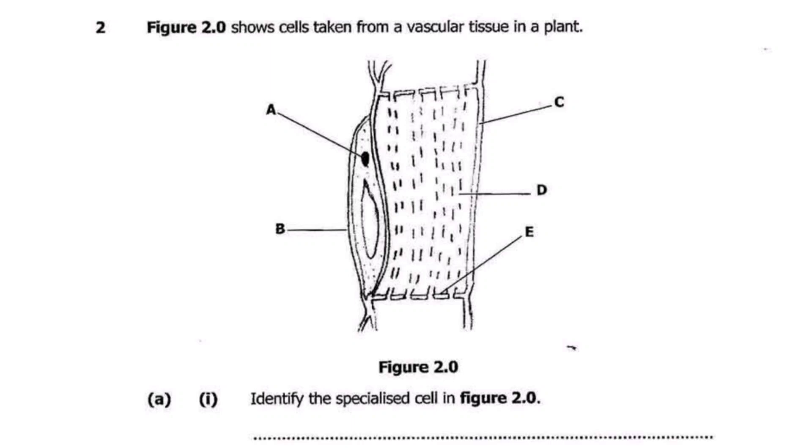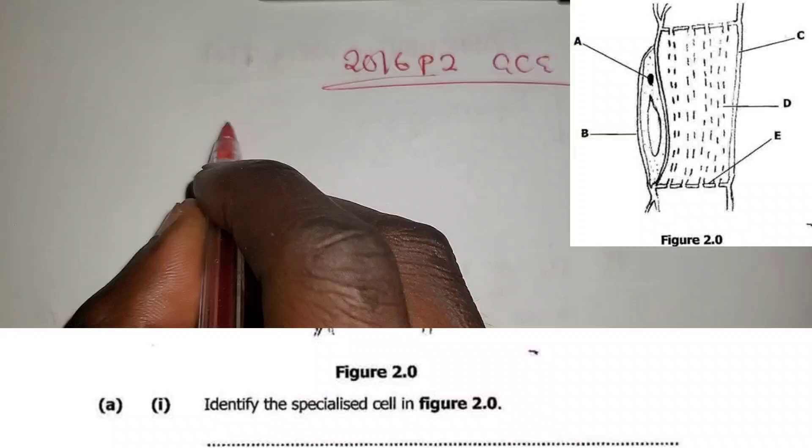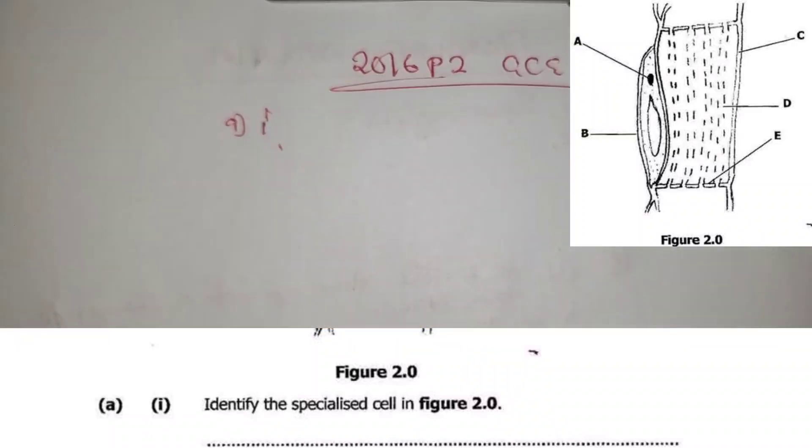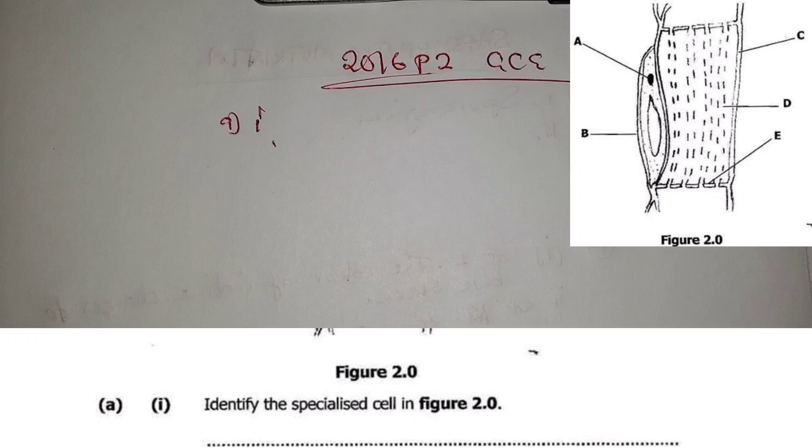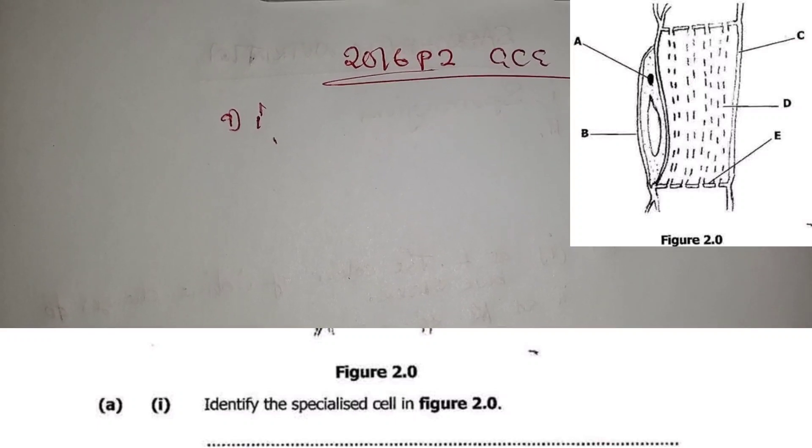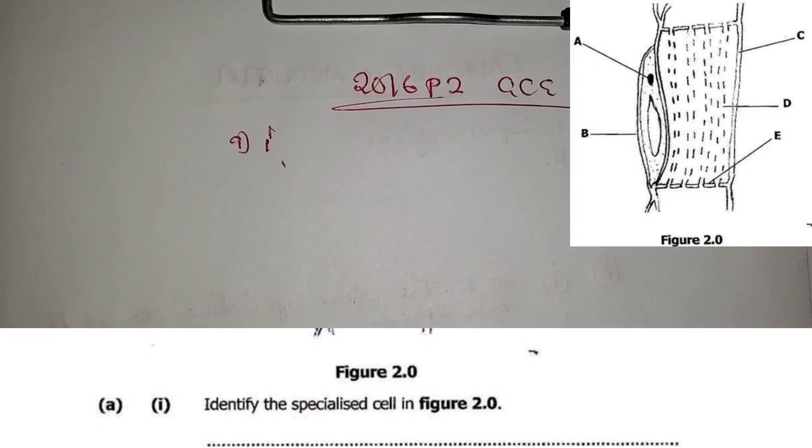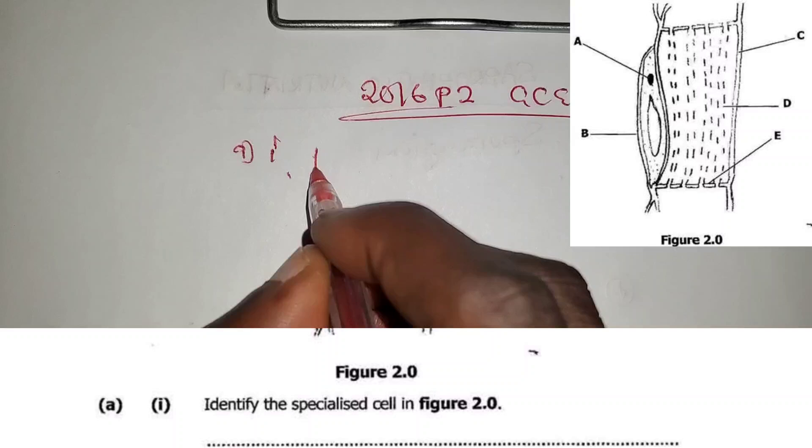We are given this question. Figure 2.0 shows cells taken from a vascular tissue in a plant. Question A1 says identify the specialized cell in Figure 2.0, but we've already answered this one previously. This is a phloem cell.